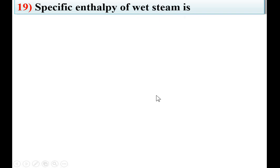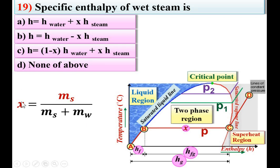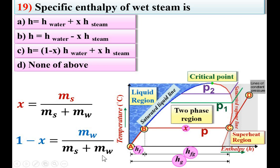Next: specific enthalpy of wet steam is which option. Dryness fraction X = MS / (MS + MW). X represents the mass fraction of steam particles, and (1 − X) is the mass fraction of water particles. For wet steam between B and C, there are both steam and water particles. So enthalpy of wet steam = X × (enthalpy of steam) + (1 − X) × (enthalpy of water). C is the right answer.